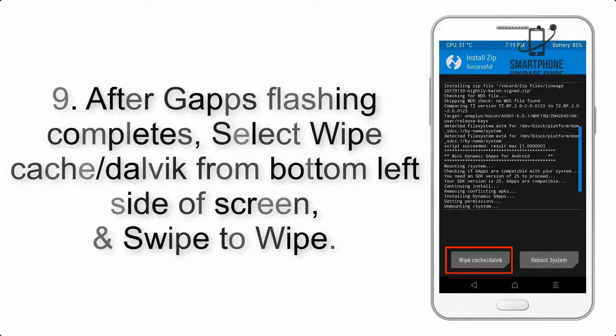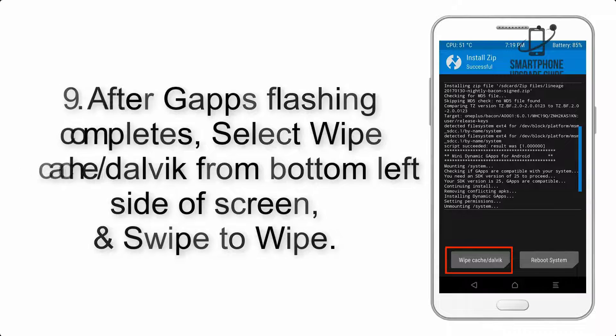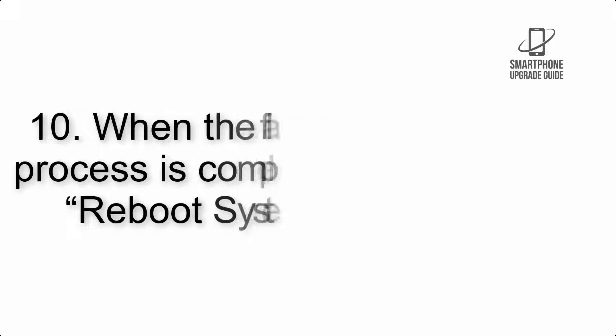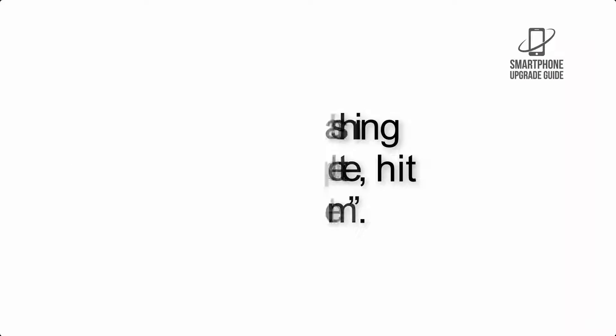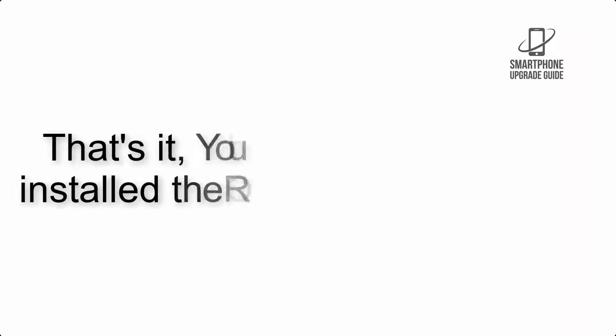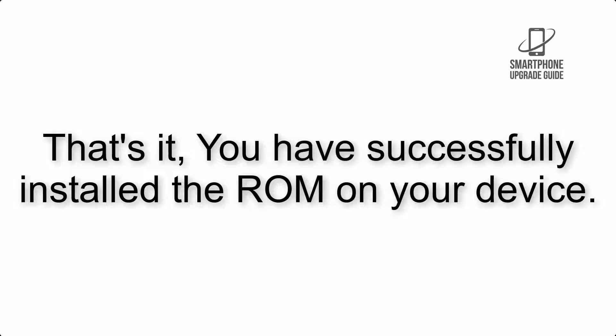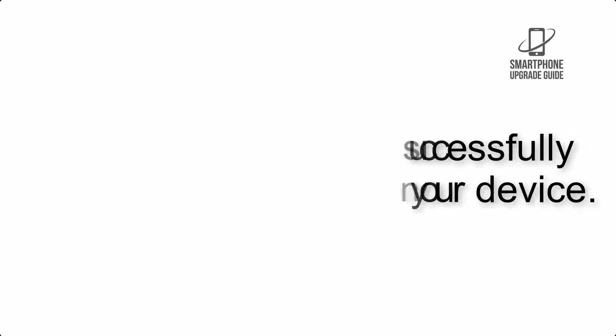Step 9: After GApps flashing completes, select Wipe Cache and Dalvik from the bottom left side of the screen and swipe to wipe. Step 10: When the flashing process is complete, hit Reboot System. That's it — you have successfully installed the ROM on your device.